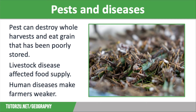Cattle in LICs often suffer from diseases such as bovine pleuropneumonia, which attacks the lungs, causing fever and respiratory problems. Animals will struggle to recover from this due to a lack of veterinary care, but also having weakened immune systems due to being undernourished. Finally, human diseases such as malaria and AIDS are common in the world's poorest nations, making those suffering much weaker and therefore unable to farm so efficiently. In areas where there is a high mortality rate from these, the available workforce for farming will be reduced.